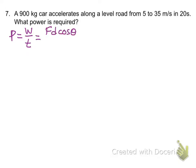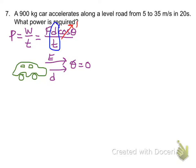I know that work is fd cosine theta, so I take that over the time. And if I draw my little car, it might look like a turtle, and the engine force is forward, the displacement is forward, so the angle between those two is zero degrees and cosine of zero is one.